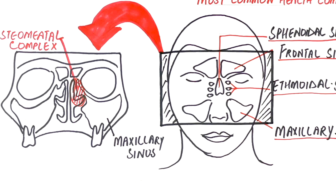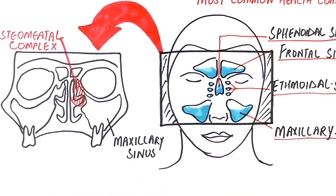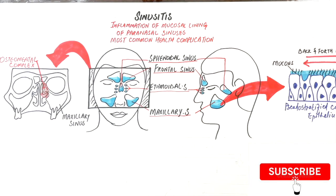Diseases of the sinus begin from blockage of the osteomatal complex, leading to disruption of normal drainage, decreasing ventilation, and precipitating a disease process. Sinuses are filled with bacteria, and changes as minor as slight mucosal thickening in the osteomatal complex can lead to improper sinus drainage and accumulation of fluids. This fluid buildup provides a favorable environment for viral and bacterial growth, resulting in infection.